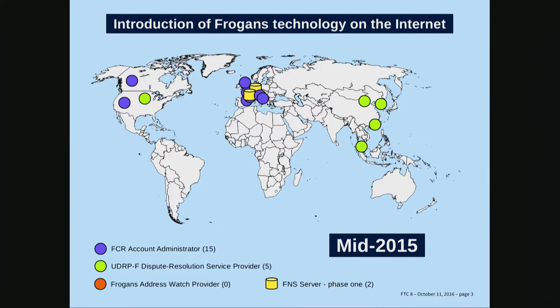We went from three to 15 FCR account administrators, one in the US and one in Canada. They are primarily in Europe, in the UK, in Switzerland, and so on. These account administrators were partially consulting firms in intellectual property or law firms working for their clients. In the system we proposed, the FCR account administrators are not necessarily a domain name registration office — it may be a law firm or a specialized service provider in publishing content. It's very open.